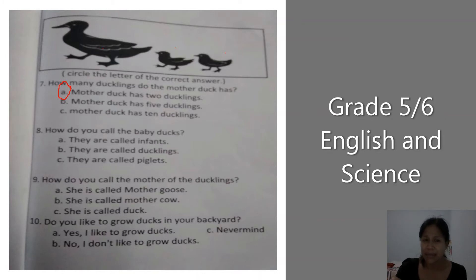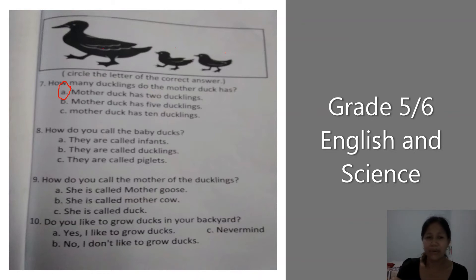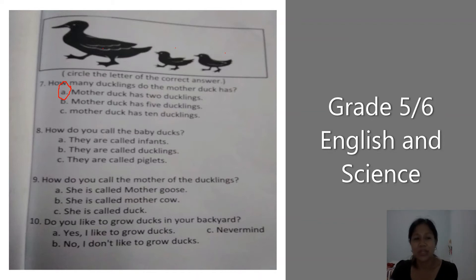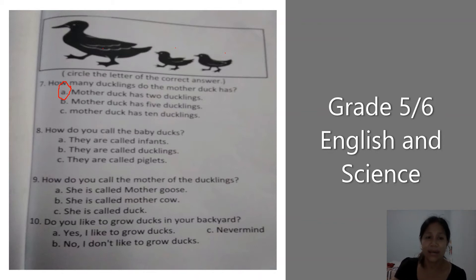Number ten: do you like to grow ducks in your backyard? A — yes, I like to grow ducks. B — no, I don't like to grow ducks. C — never mind. Circle the letter of the correct answer.